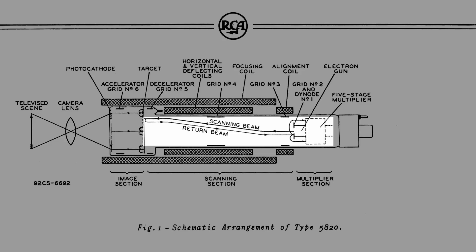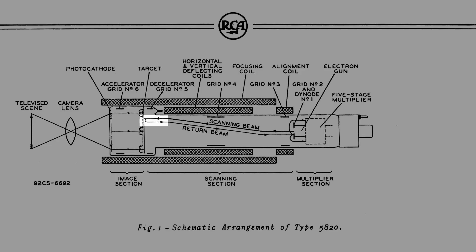The beam is focused at the target by the magnetic field of an external focusing coil and the electrostatic field of grid number four. Grid number five serves to adjust the shape of the decelerating field between grid number four and the target in order to obtain uniform landing of the electrons over the entire target area.